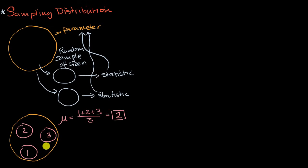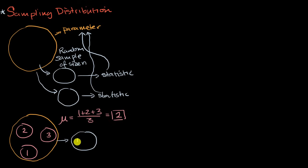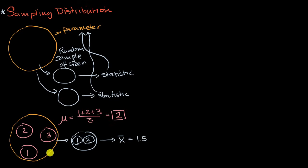But let's say we wanted to take samples of two balls at a time, and every time we take a ball, we'll replace it, so each pick is an independent event. We're going to use those samples of two balls in order to estimate the population mean. For example, this could be our first sample of size two. Let's say in that first sample I pick a one and a two. Then I can calculate the sample mean, which is used to estimate the population mean — for this sample of two, it's going to be 1.5.